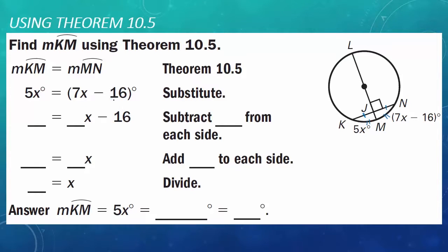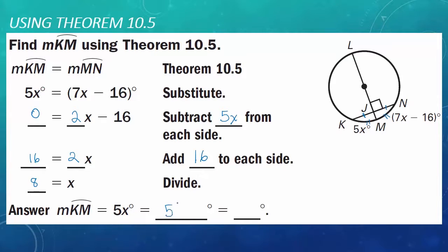5X is equal to 7X minus 16. In order to work with positive numbers, we subtract 5X on both sides, giving us 0 equals 2X minus 16. Then add 16 to both sides: 16 equals 2X. Divide by 2 on both sides — X equals 8. Now that I know the value of X, I still need to find the measure of arc KM. I know that KM is 5X, so I plug in 8: 5 times 8 is 40. So the measure of arc KM is 40 degrees.